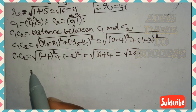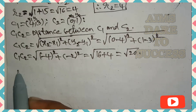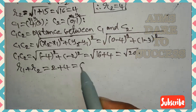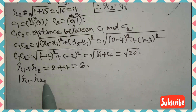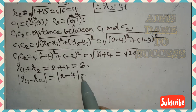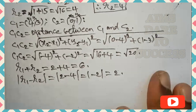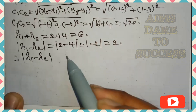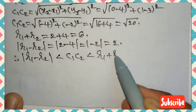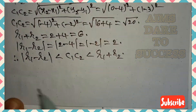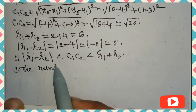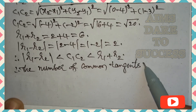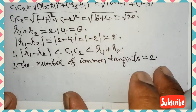Now checking the r₁ and r₂ relation: r₁ + r₂ = 2 + 4 = 6, and |r₁ − r₂| = |2 − 4| = 2. Since |r₁ − r₂| < C₁C₂ < r₁ + r₂ — that is, 2 < √20 < 6 — this condition is satisfied, confirming the number of common tangents is exactly 2.